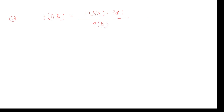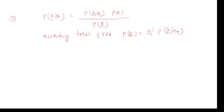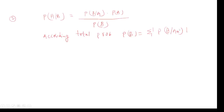Coming to the version using total probability, we take the same equation P(A|B) = P(B|A) · P(A) / P(B). Here, P(B) can be written according to the total probability theorem as P(B) = sigma P(B|A_n) · P(A_n) divided by P(A_n).